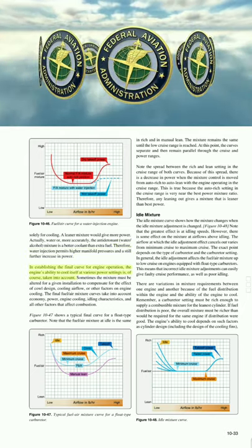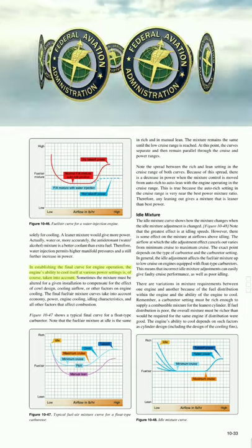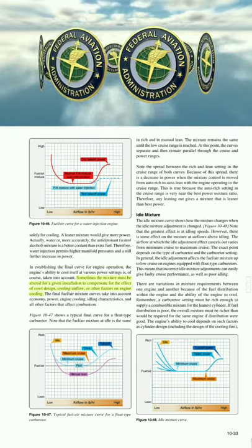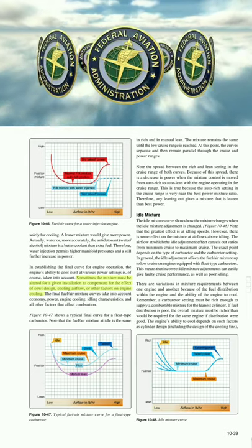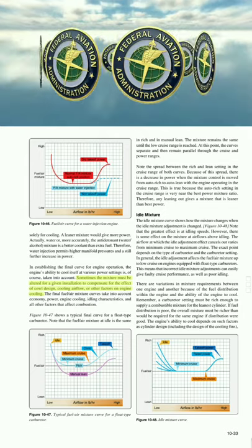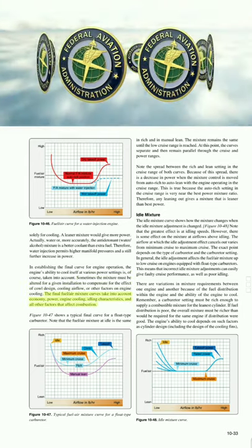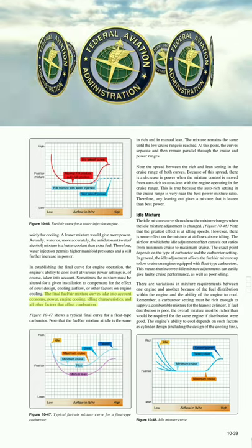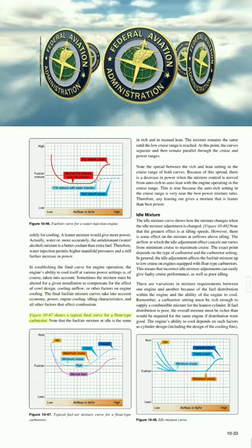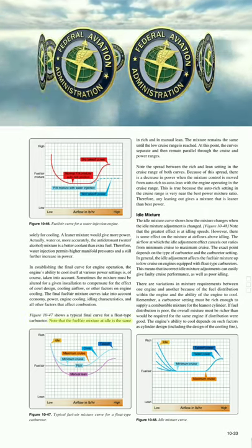In establishing the final curve for engine operation, the engine's ability to cool itself at various power settings is taken into account. Sometimes the mixture must be altered for a given installation to compensate for the effect of cowl design, cooling airflow, or other factors on engine cooling. The final fuel/air mixture curves account for economy, power, engine cooling, idling characteristics, and all other factors affecting combustion.